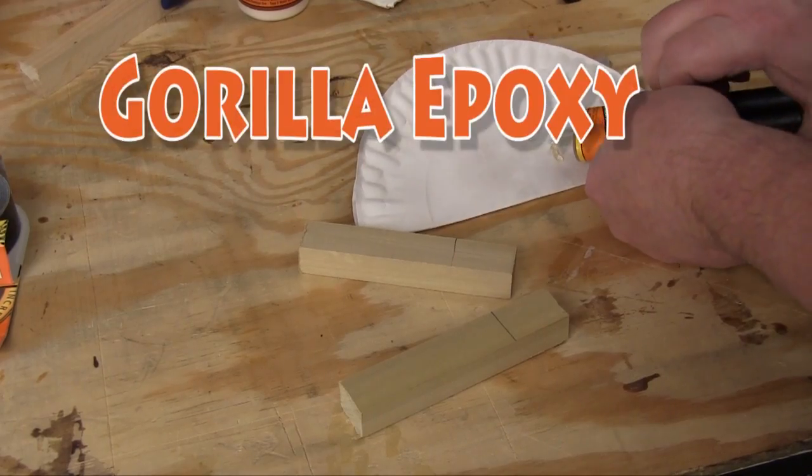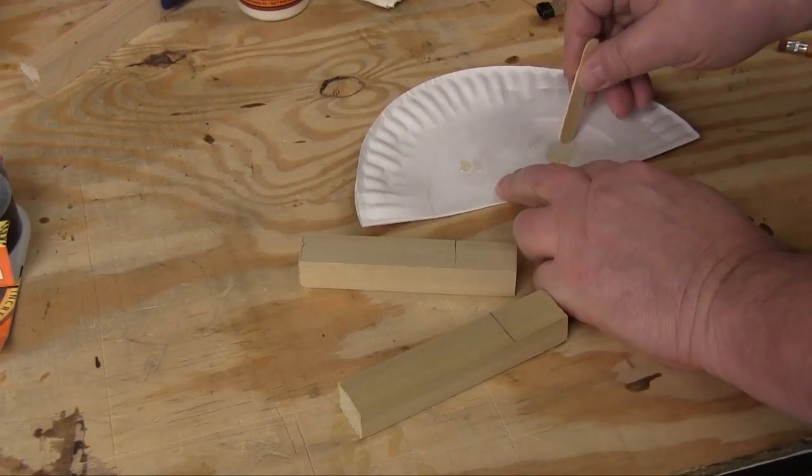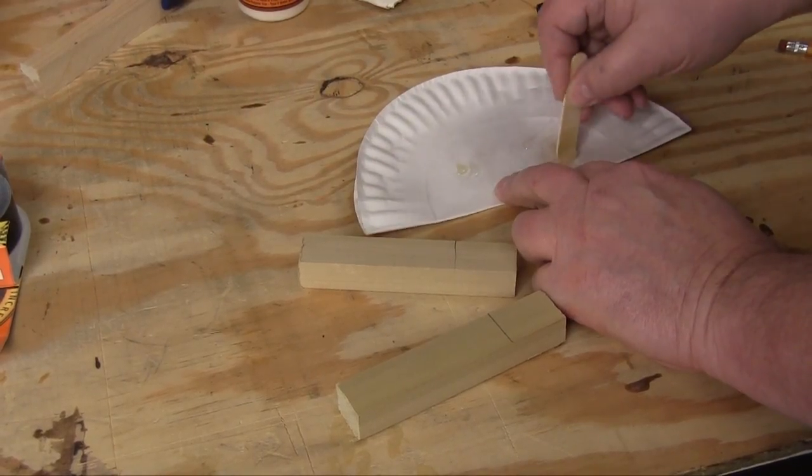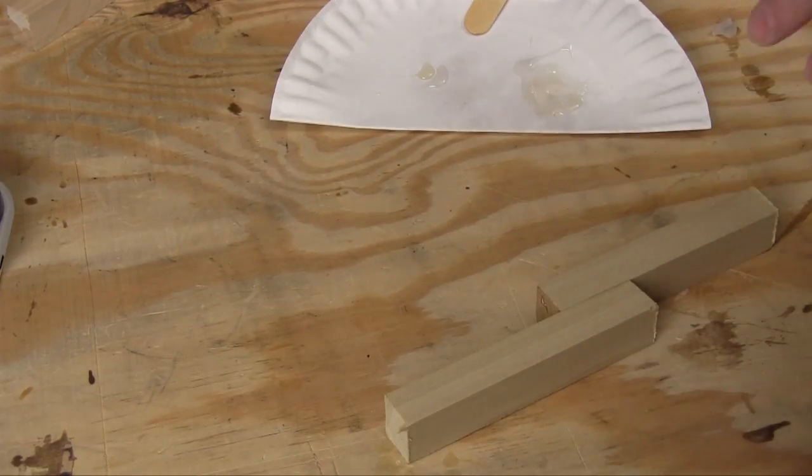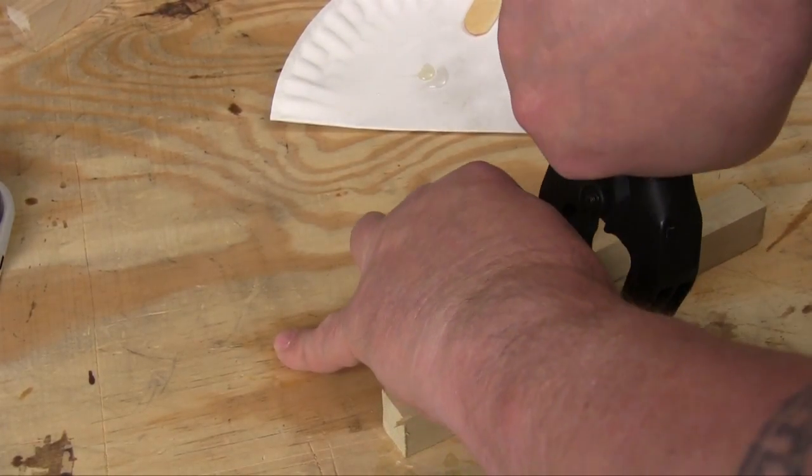And finally, I carefully mixed up and applied some of the Gorilla epoxy to the same kind of wood sticks. Then all of the pieces were put in clamps and left to dry overnight.